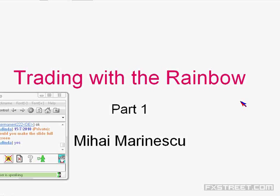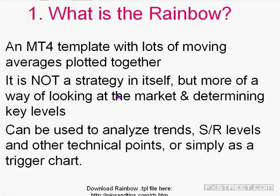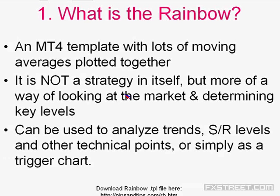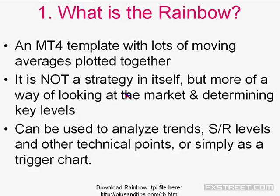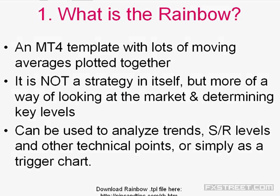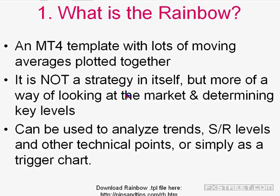My plan is to go over this brief presentation that I prepared for you guys, explain each point one by one, and then have at least half an hour to look over real setups in the market. So first of all, what is this rainbow? It's basically a template, an MT4 template. It's just slotting moving averages from very fast ones down to 200, so that makes a lot of moving averages at the same time on your screen.